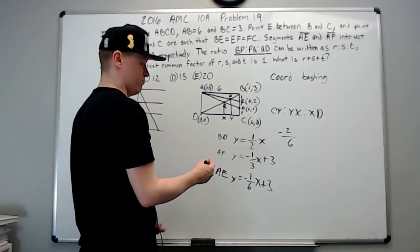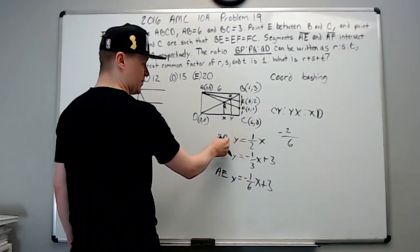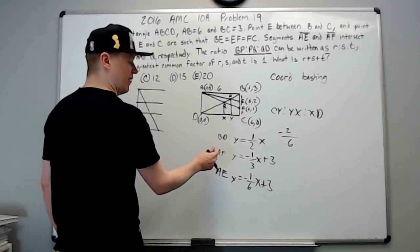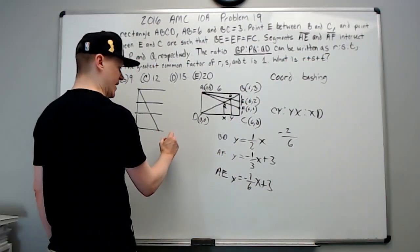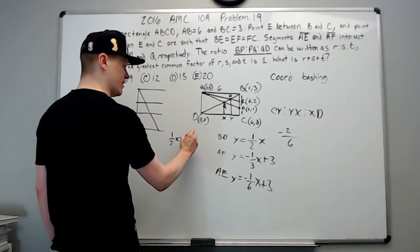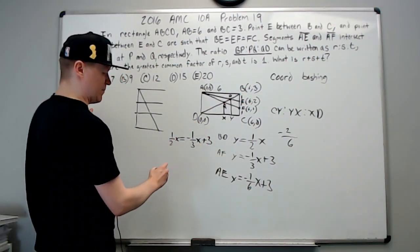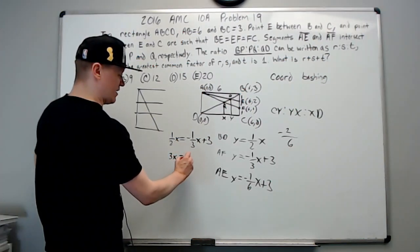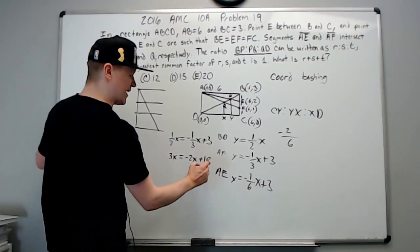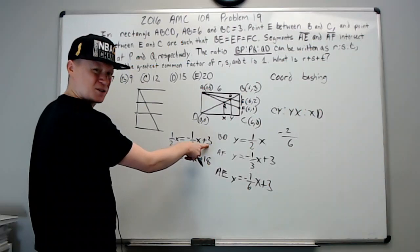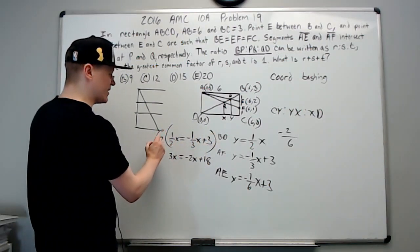All right, we just need points of intersection. This really isn't that hard. Set BD equal to AF, so one-half x is going to equal negative one-third x plus three. I'm going to go ahead and multiply by six. Three x equals negative two x plus 18.